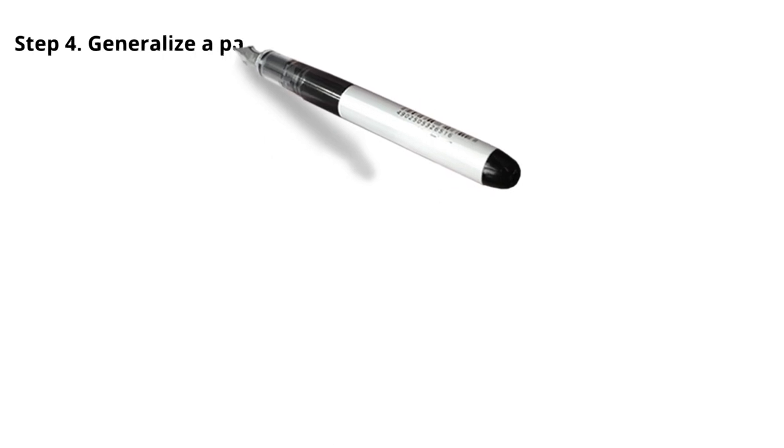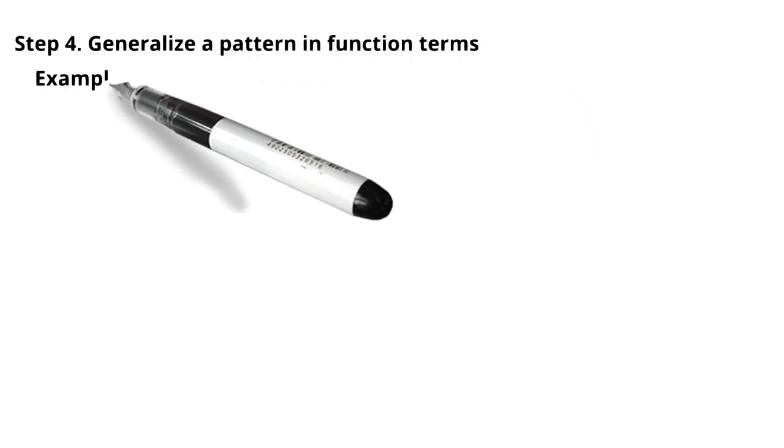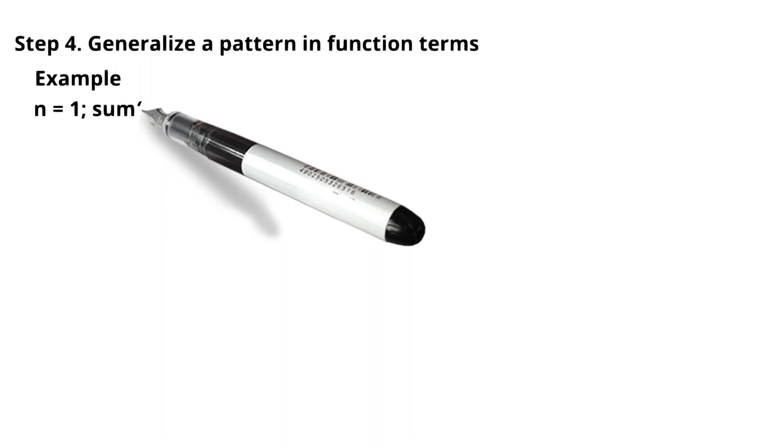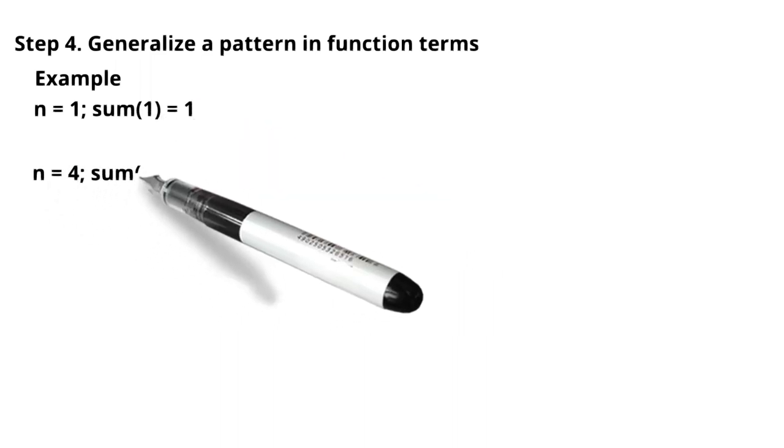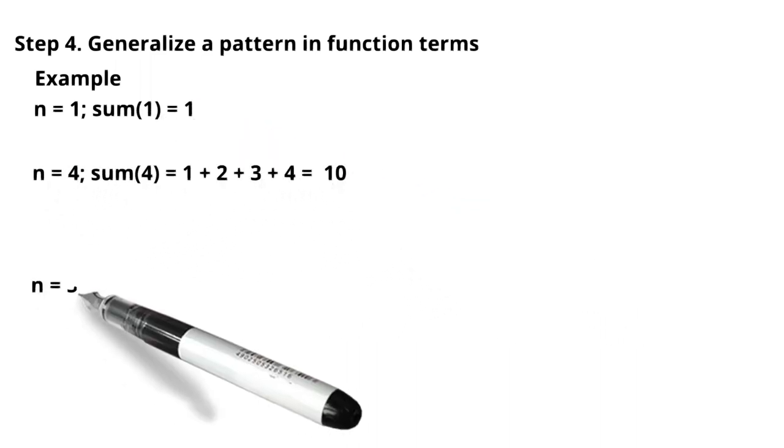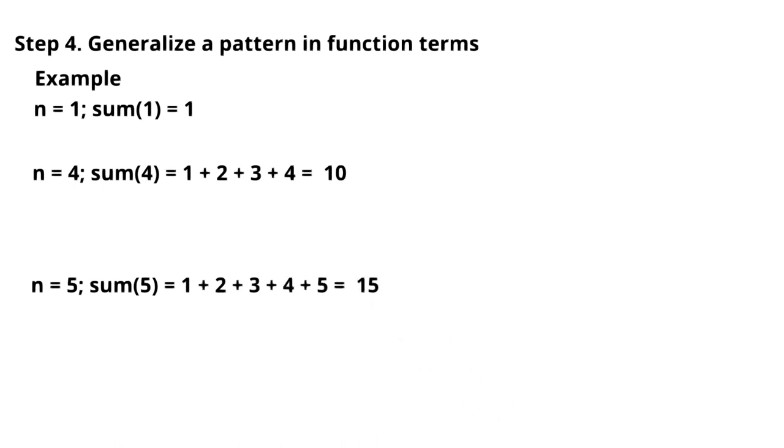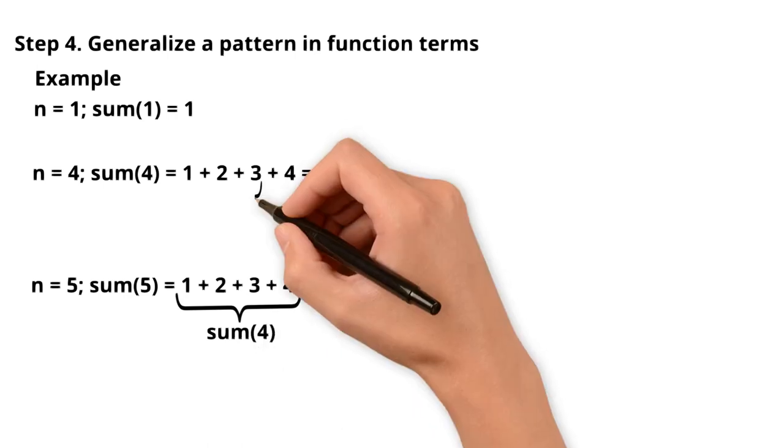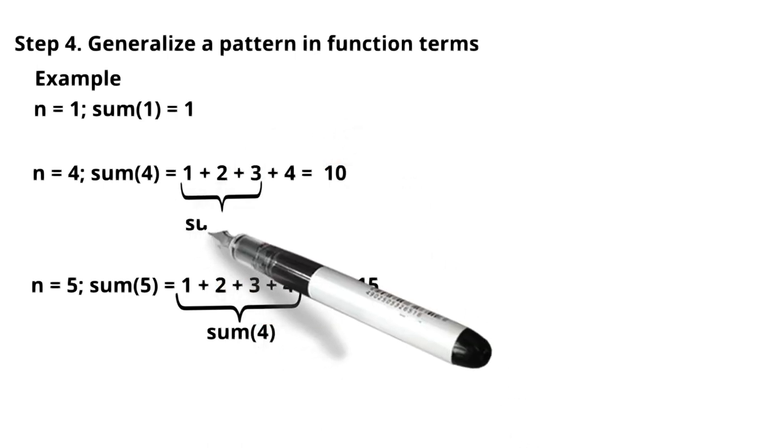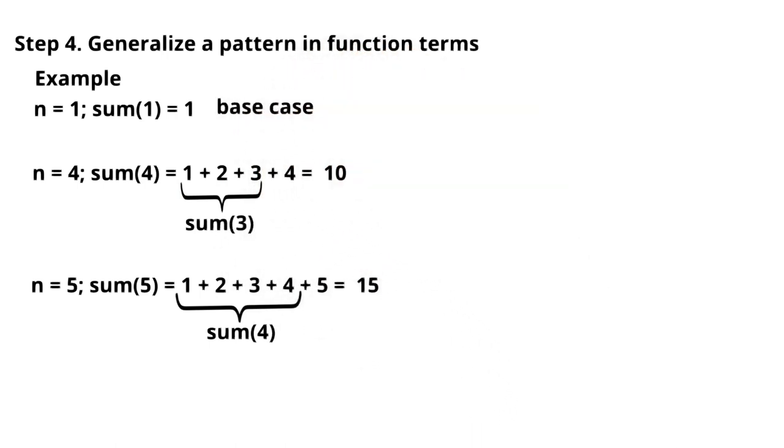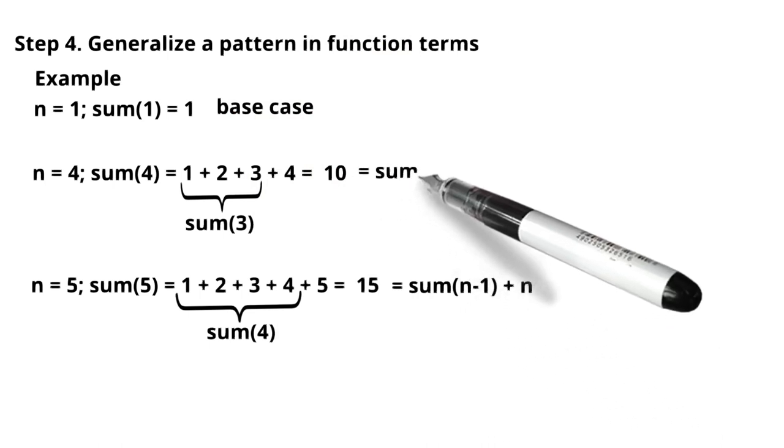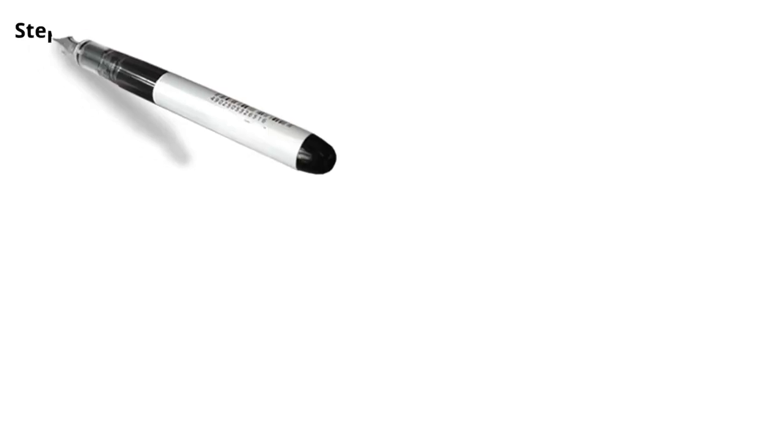Step 4. Generalize a pattern in function terms. From the input and output data we have already created, we can see that summation of 5 is equal to summation of 4 plus 5, which equals n. Summation of 4 is equal to summation of 3 plus 4. So we can say summation of n minus 1 plus n is our pattern for this problem.